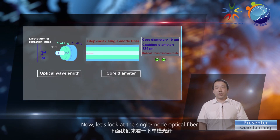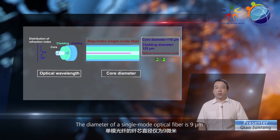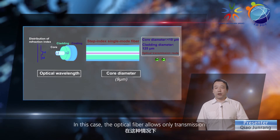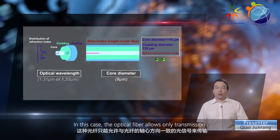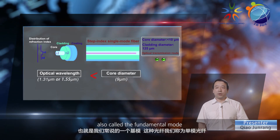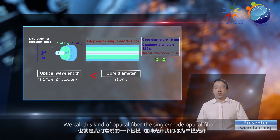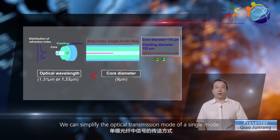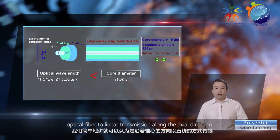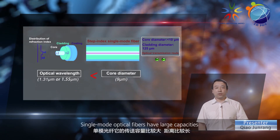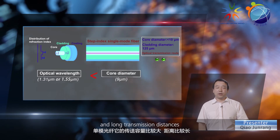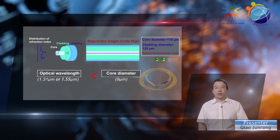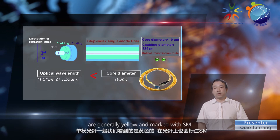Now let's look at the single-mode optical fiber. The diameter of a single-mode optical fiber is 9 micrometers, which is at the same level as the wavelengths of optical signals. The optical fiber allows only transmission in the same direction as the axial direction, also called the fundamental mode. We can simplify the optical transmission mode of a single-mode optical fiber to linear transmission along the axial direction. Single-mode optical fibers have large capacities and long transmission distances and are the most commonly used optical fibers in contemporary optical communication. Single-mode optical fibers are generally yellow and marked with SM.